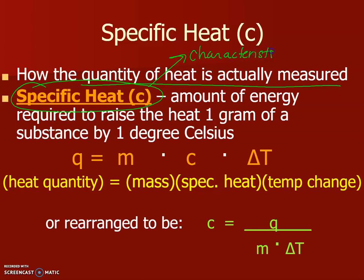So this is going to be a characteristic that we are going to use to identify the different types of substances that we have, just how we have densities that are unique to everything and we have melting points and boiling points that are going to be unique to everything. Specific heat is going to be unique to all of your substances also.